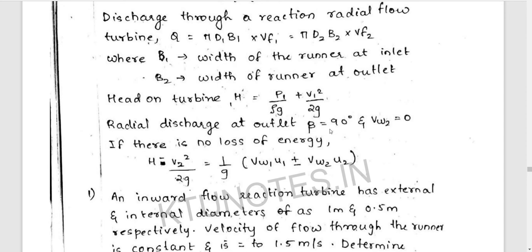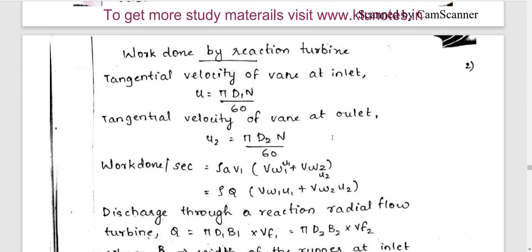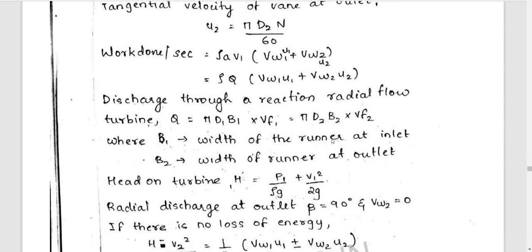For radial discharge at the outlet, Beta is equal to 90 degrees and Vw2 is equal to 0. If there is no loss of energy, H equals V squared by 2G, which equals (1 by G) into (Vw1 U1 plus or minus Vw2 U2).